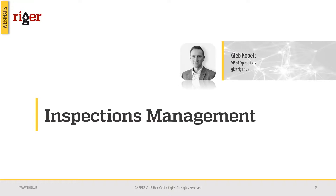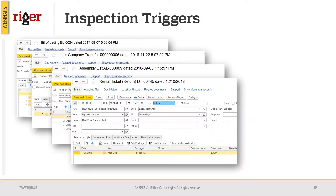Before we start diving deeper into the topic, I'd like to give a quick overview of the inspection management process in Rigor. Every company that runs rental equipment in the oil field needs to maintain the equipment, do repairs, and frequently perform inspections to maintain the full capability of that equipment. In terms of documents that can trigger an inspection process in Rigor, we have four documents in place.